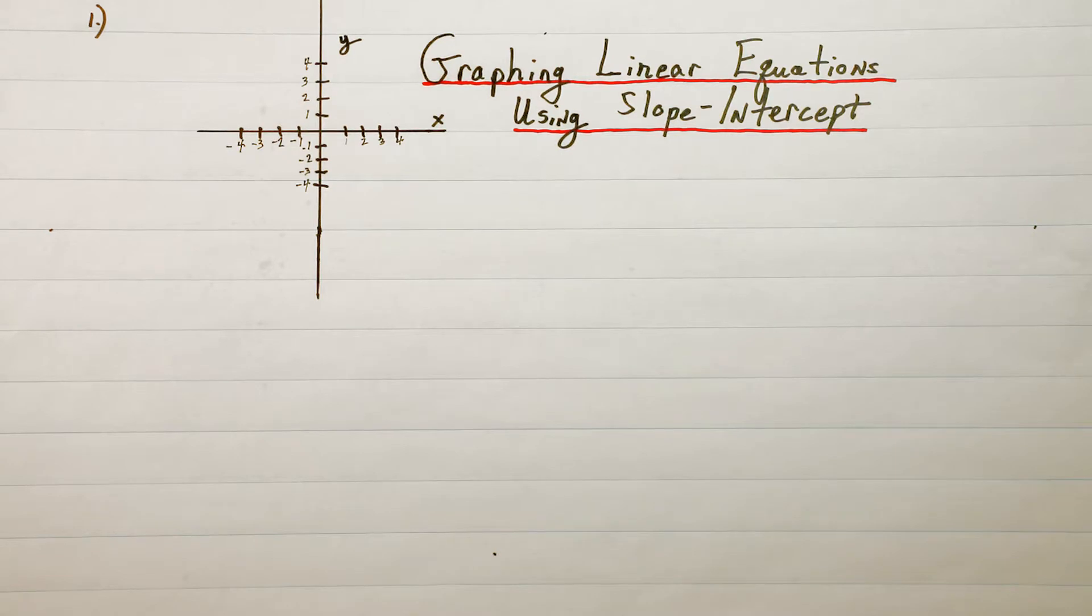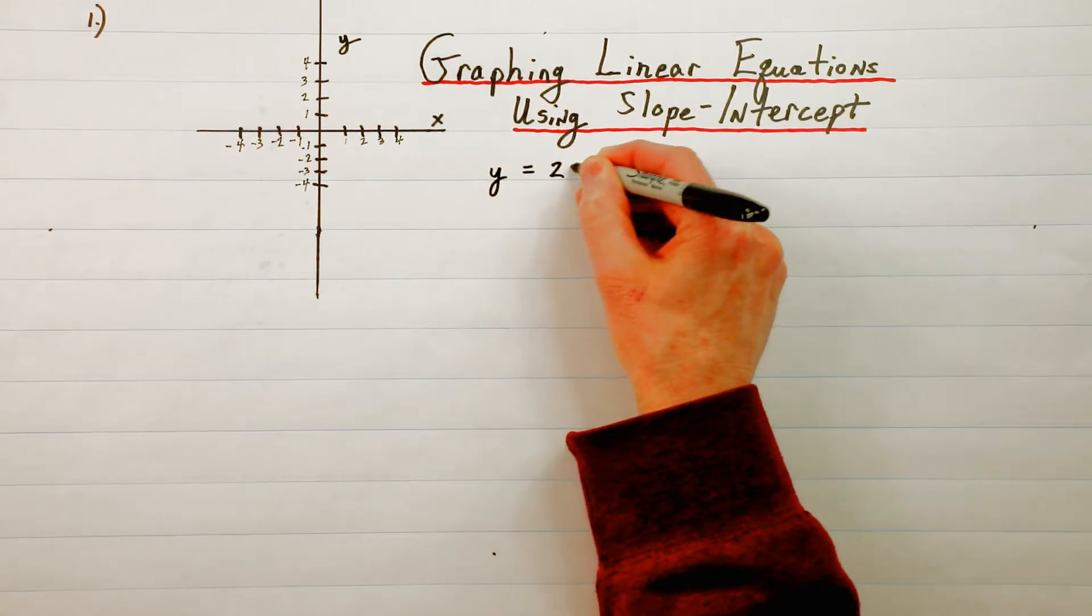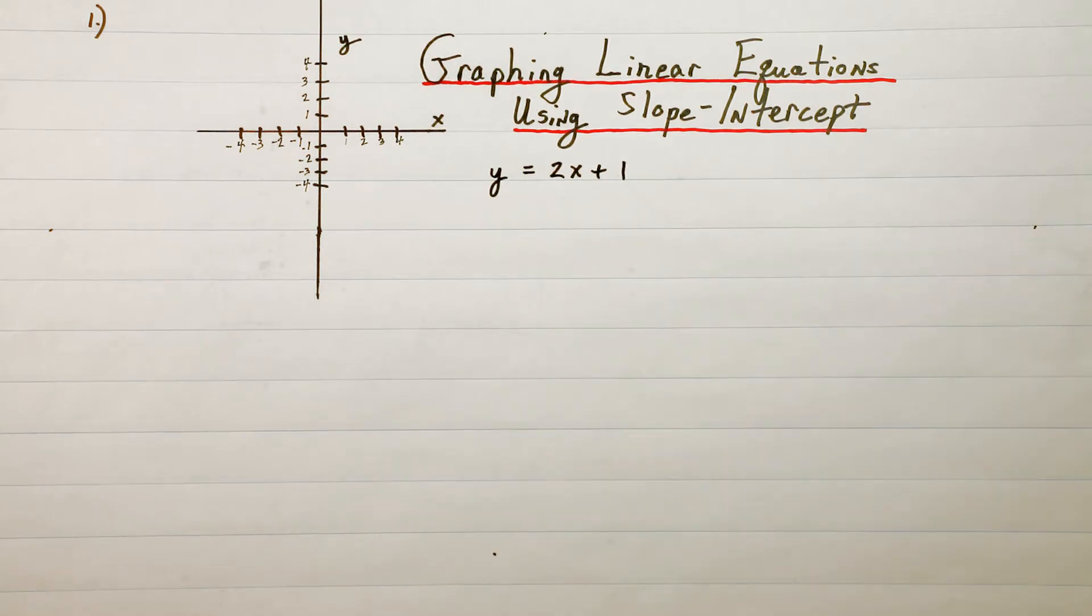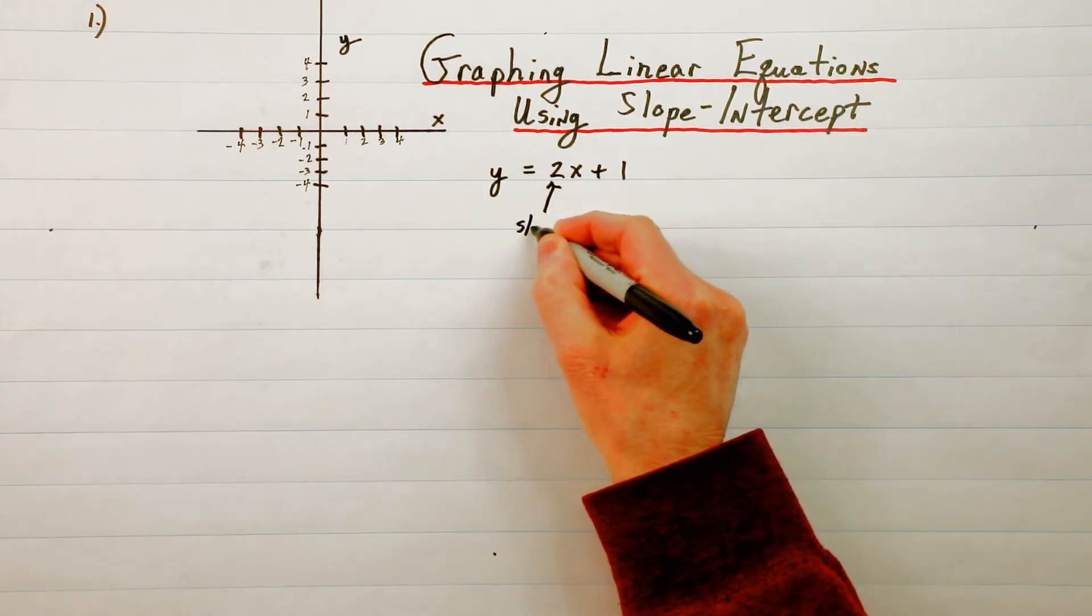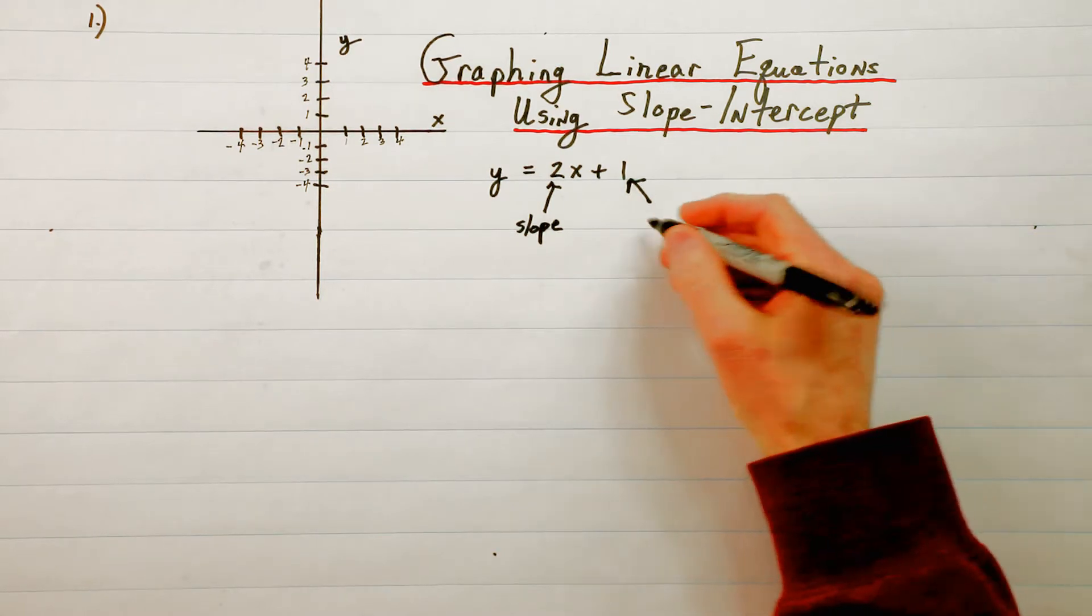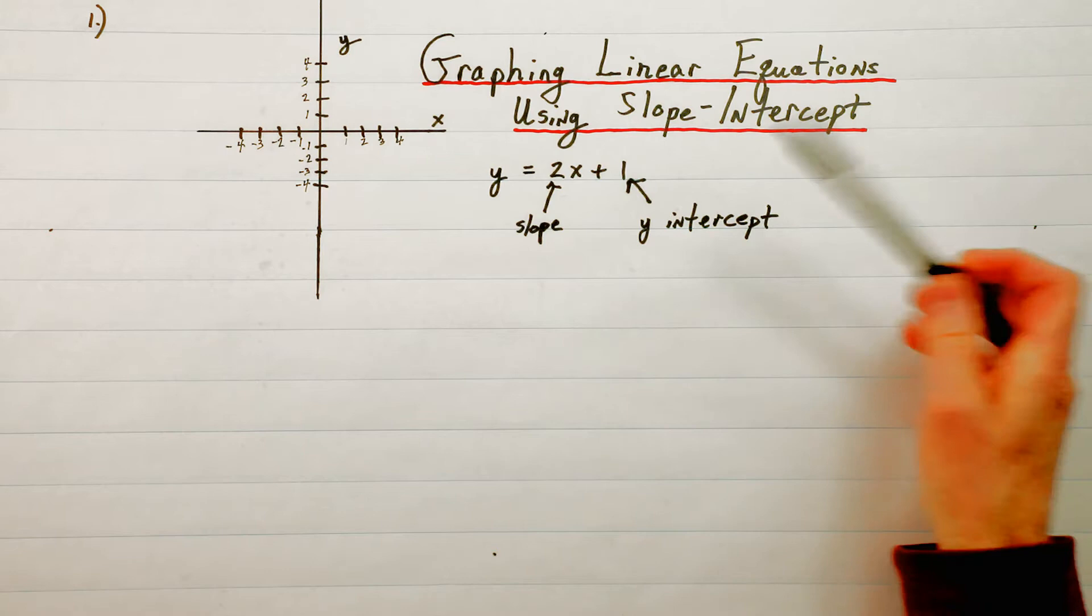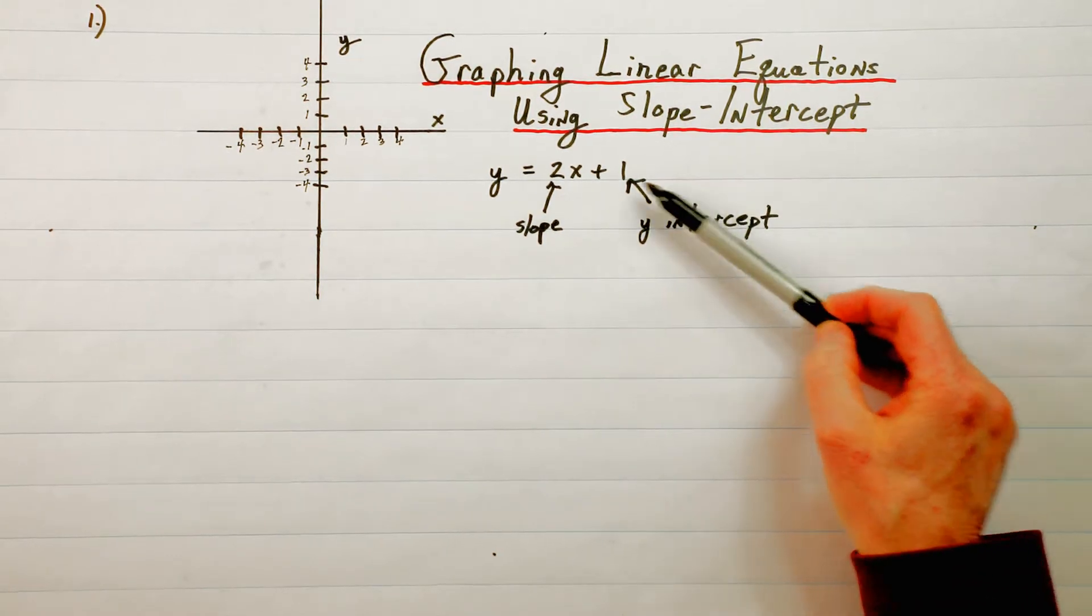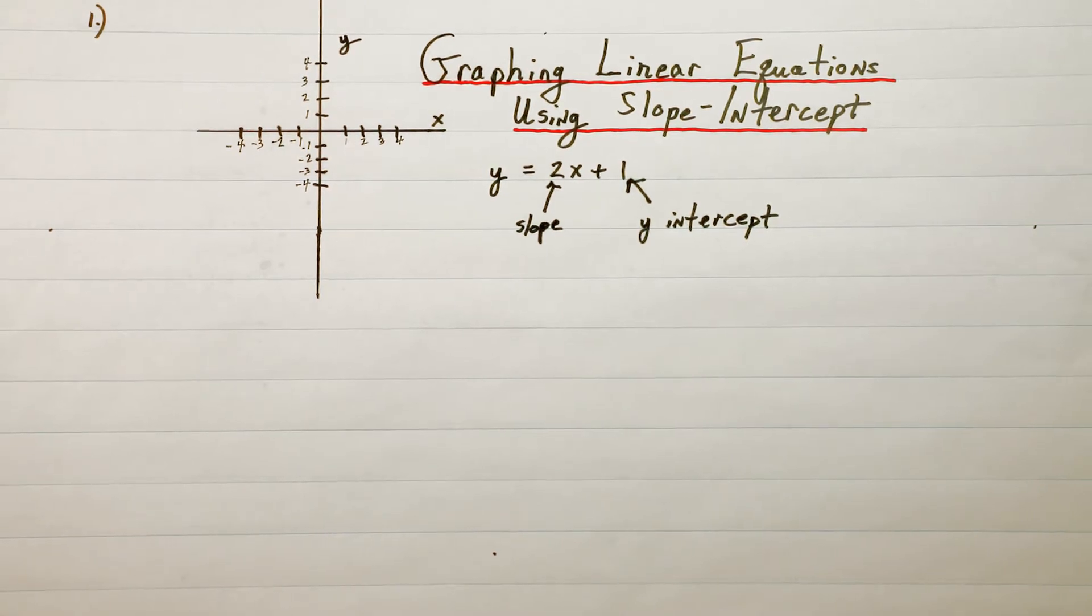Okay let's proceed. So the first equation that we're going to work with today is y equals 2x plus 1. Now you remember from the other day when we did y equals mx plus b, the coefficient of x is the slope and this number on the end when it's in y equals mx plus b form is called the y-intercept. In the equation y equals mx plus b, the y-intercept is the b value and the slope is the m.